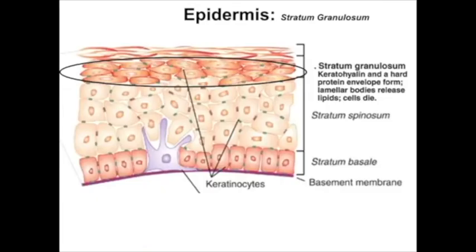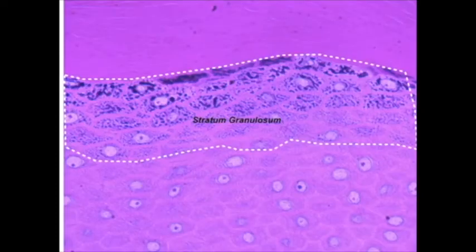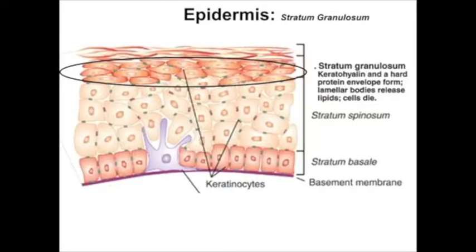Just deep to the stratum corneum is the next layer, the stratum granulosum. The stratum granulosum can be identified by the granular appearance of the cells — they have been accumulating keratin and packets of lipids as they mature from the lower layers. At this point they may start to release those lipids, which help form part of the waterproof layer. These cells are far removed from the blood supply of the underlying dermis, so they are beginning to die.